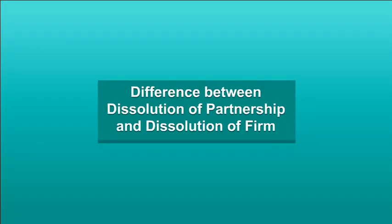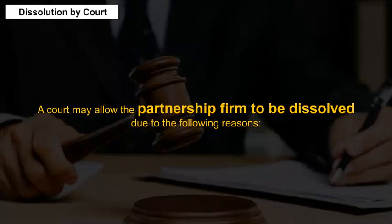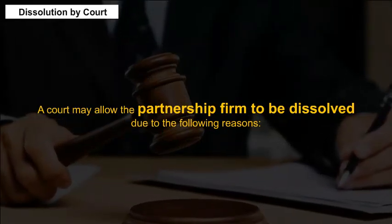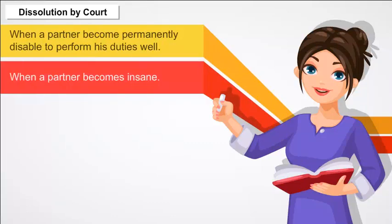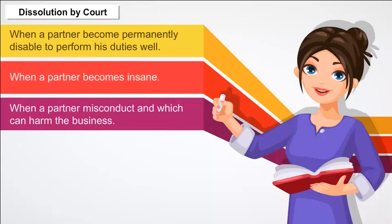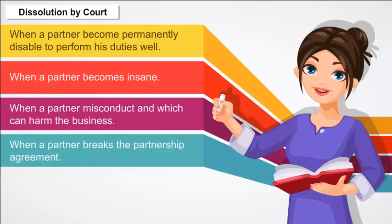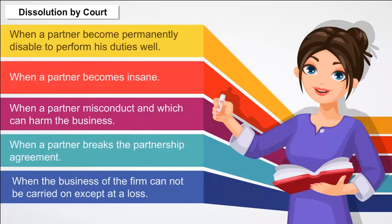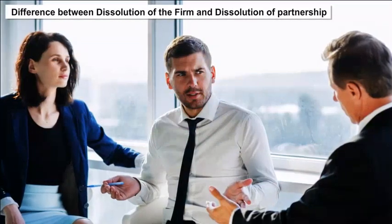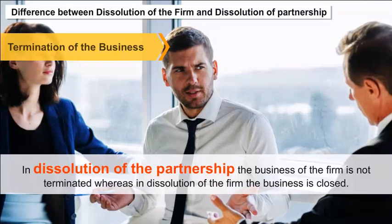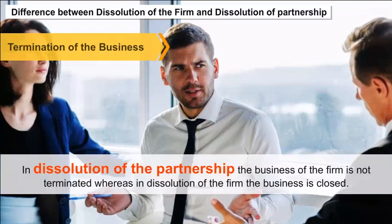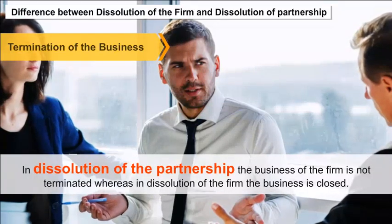Dissolution by Court: A court may allow the partnership firm to be dissolved due to the following reasons: when a partner becomes permanently disabled to perform his duties well, when a partner becomes insane, when a partner misconducts in a way that can harm the business, when a partner breaks the partnership agreement, or when the business of the firm cannot be carried on except at a loss. Regarding the difference: in dissolution of the partnership, the business of the firm is not terminated, whereas in dissolution of the firm, the business is closed.